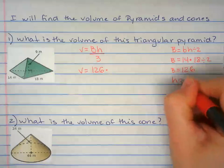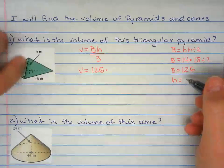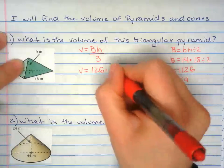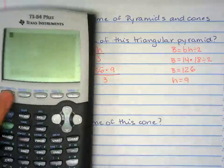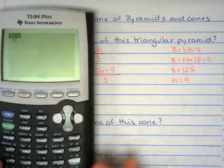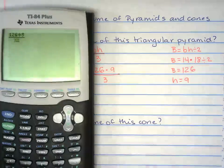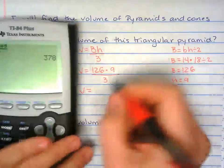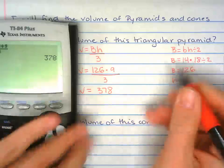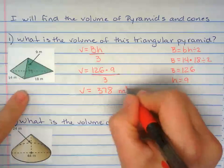The height of the pyramid right there is given nine. Everything divided by three. Plug that in. So the volume of the pyramid is 378 cubic meters.